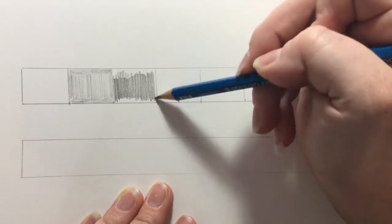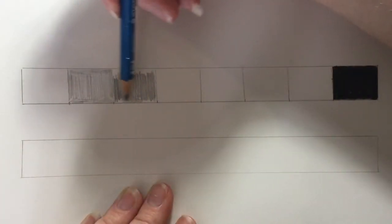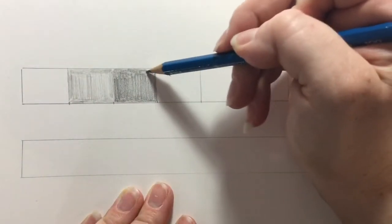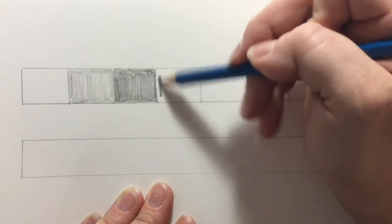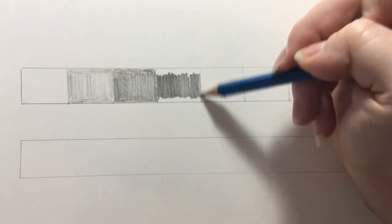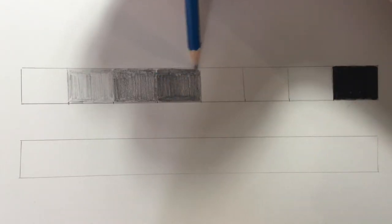Now I'm going to push my pencil down just a little bit more so that I create my next darkest value, but I still want it to be relatively light. And then the next box is going to be just a shade darker, so I'm pushing my pencil down just a little bit more.